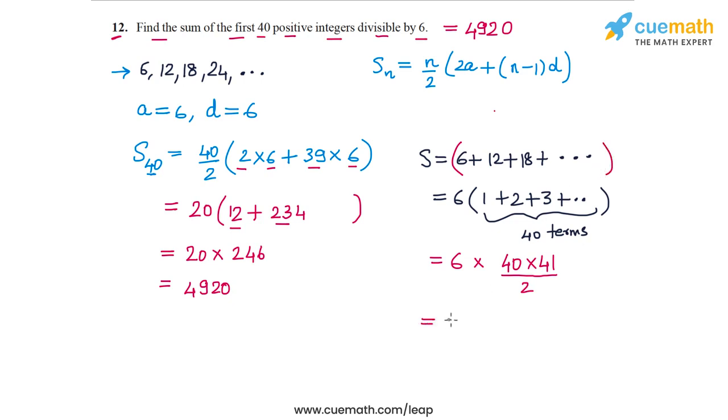You can verify that this will come to the same value 4920. So instead of finding the sum using this formula, we could solve the same problem by taking out a common factor of 6 and then using the sum formula for the sum of the first n natural numbers.